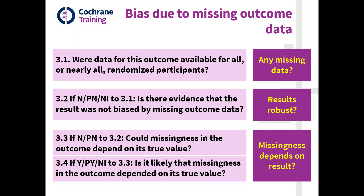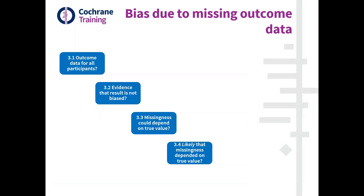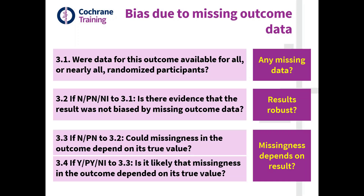Reading the guidance to know the best way to answer these questions is about the best guidance we can offer. Just to say, in answering the question — could missingness in the outcome depend on its true value — and the elaboration to the question makes this clear: you should be thinking about whether the proportions of missing outcome data differed between the intervention and the control groups, and whether there is evidence that missingness in the outcome data depended on its true value because of the reasons for missingness or because the reasons for missingness varied between the intervention groups. That's how you answer questions 3.3 and 3.4, based on considerations we discussed earlier on.